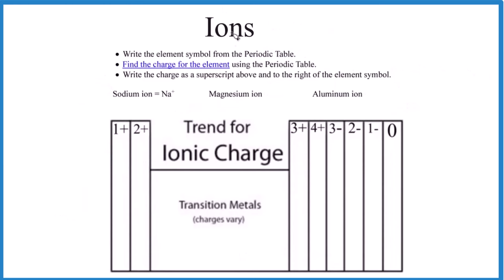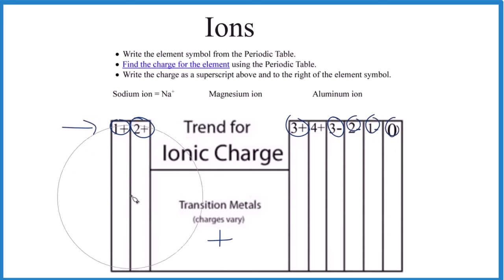Ionic compounds are made up of ions — positive and negative ions. It follows a trend: Group 1 is one plus, Group 2 is two plus, transition metals are positive but we have to look at what they're bonded to to figure out the charge — they can go up to four plus or four minus — then three minus, two minus, one minus, zero. Internalize this table because it's essential for naming ionic compounds.